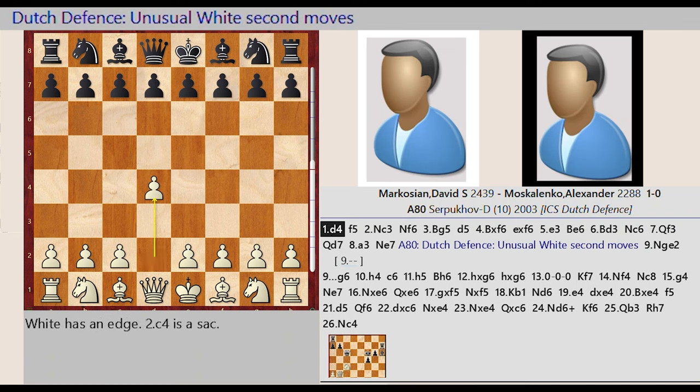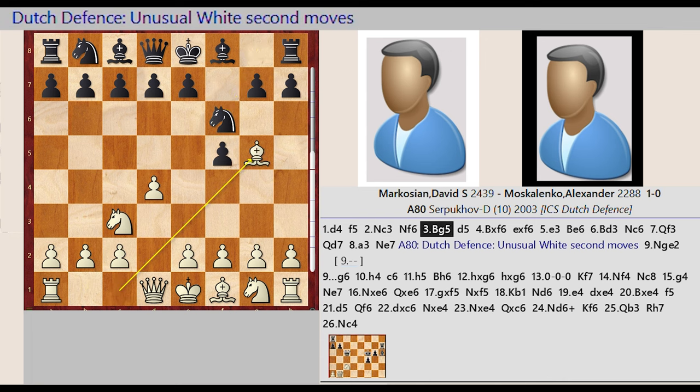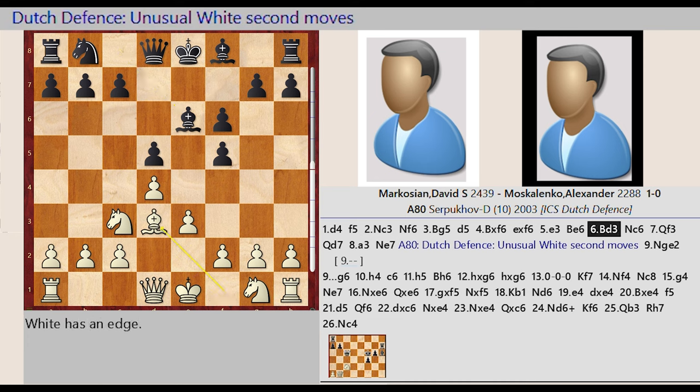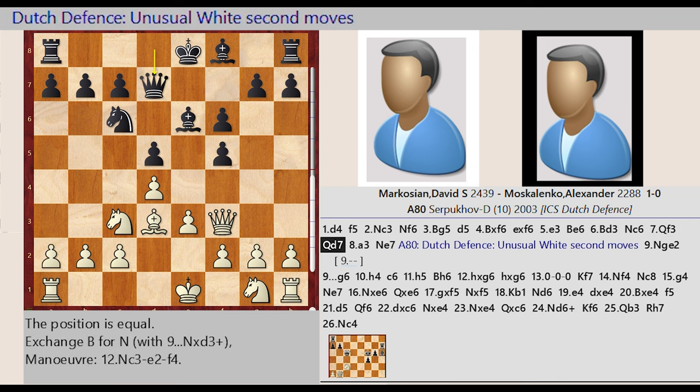d2 d4, f7 f5, knight b1 c3, knight g8 f6, bishop c1 g5, d7 d5, bishop g5 captures f6, e7 takes on f6, e2 e3, bishop c8 e6, bishop f1 d3, knight b8 c6, queen d1 f3, queen d8 d7.